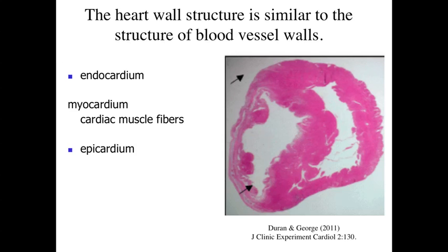Within the blood vessel we had the tunica intima, an endothelial-lined space along the inside of the vessel. In the heart we have the endocardium, again lined by an endothelium — a simple squamous epithelium. In a blood vessel wall we had the tunica media, the layer with the smooth muscle. In the heart we're going to have the myocardium, which contains cardiac muscle fibers — very parallel to what we saw within the blood vessels.